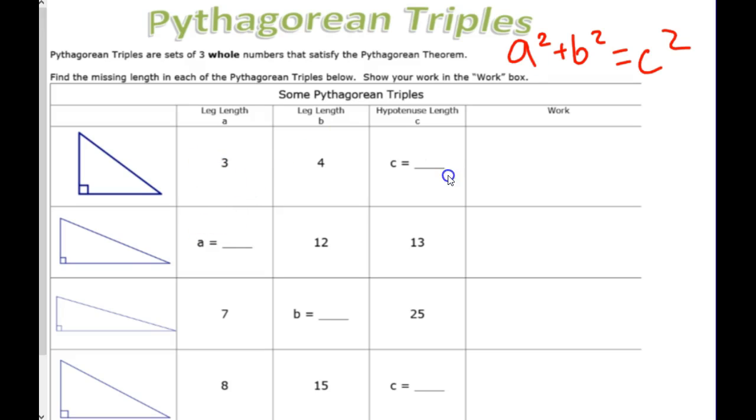We're going to use 3, 4, and the missing side over here in our work column. So, let's write 3 squared for A squared, 4 squared for B squared, C squared is missing.